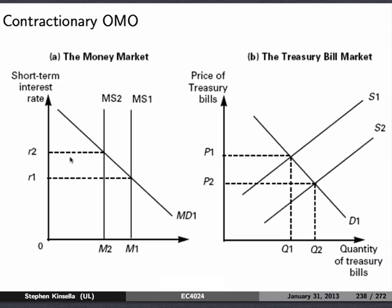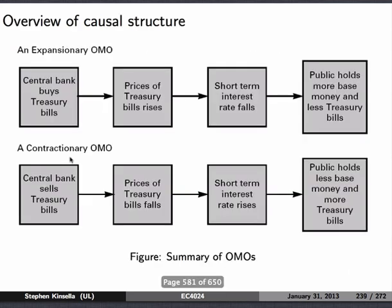Here's the exact opposite: a contractionary open market operation. The central bank feels the economy is overheating and wants to reduce the money supply in the system — it can simply change the interest rates and change the price of treasury bills. In an expansionary open market operation, which is exactly what we have now, the central bank buys treasury bills, which causes the price of these bills to rise, causing the short-term interest rate to fall, and the public holds more money and less T-bills, thus having more cash to spend. In a contractionary open market operation, they sell T-bills, prices fall, short-term interest rates rise, and the public holds less.